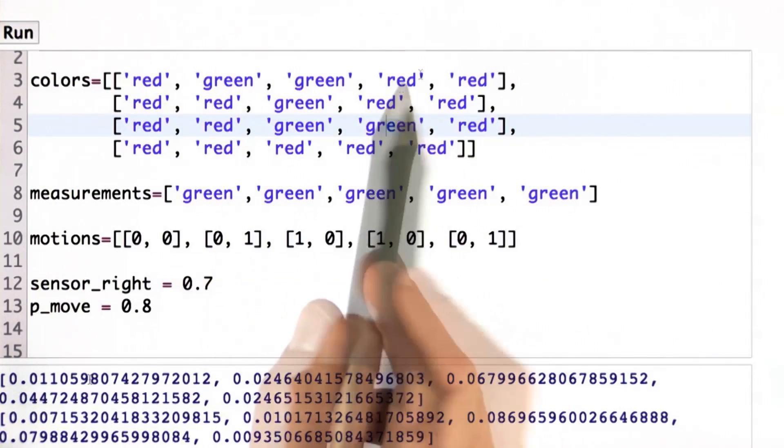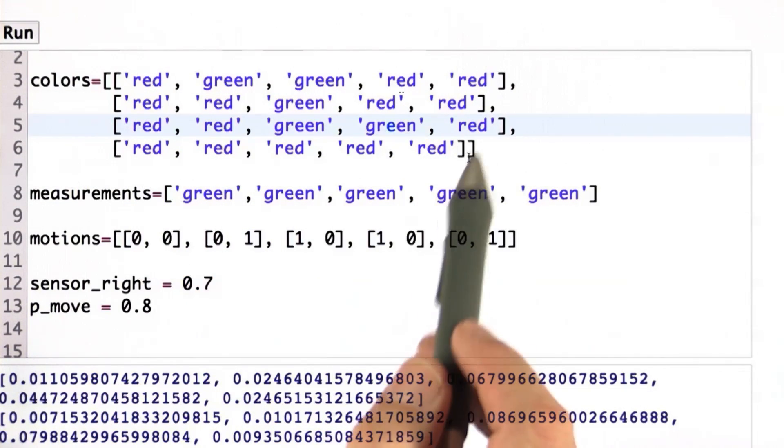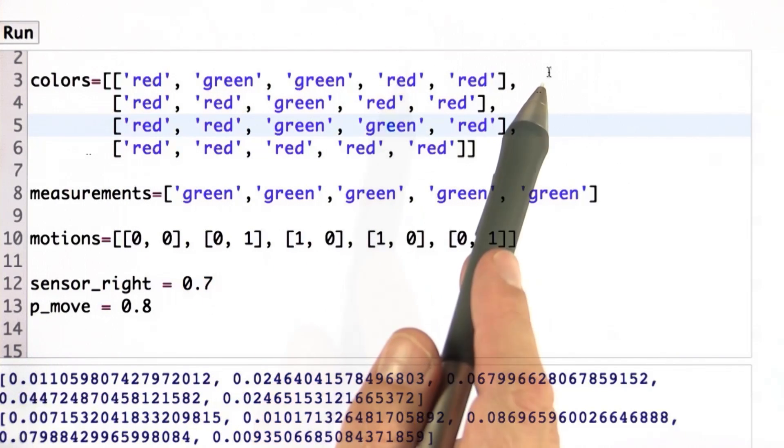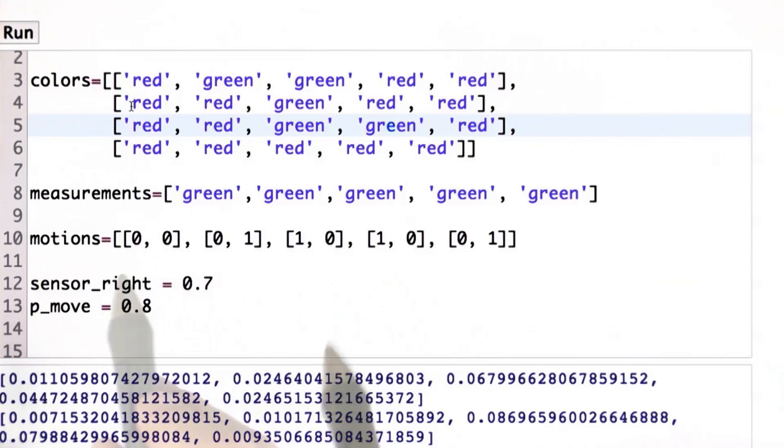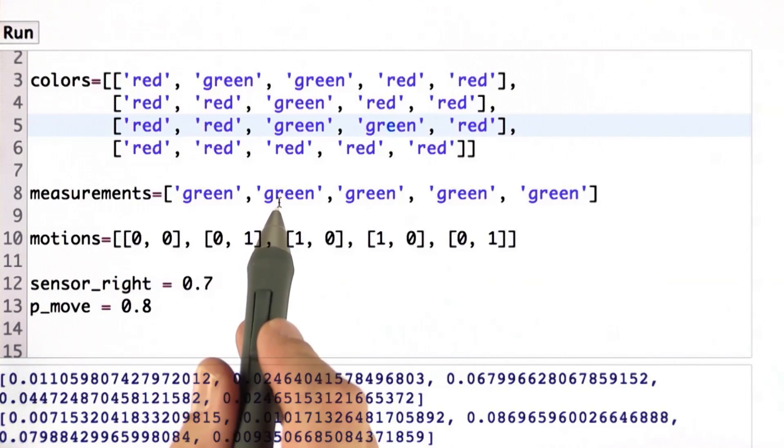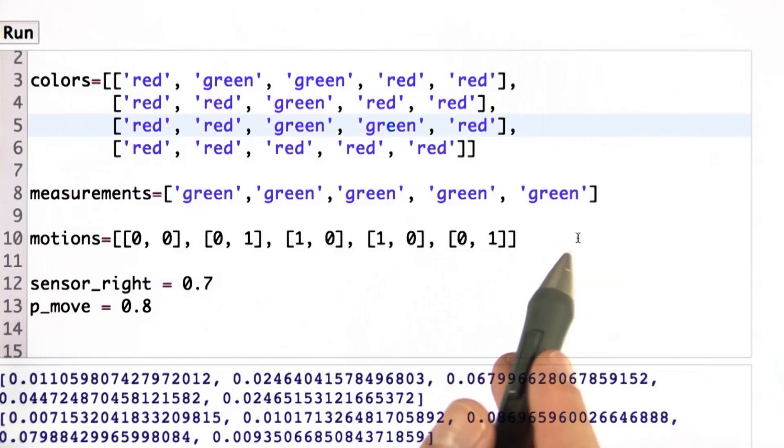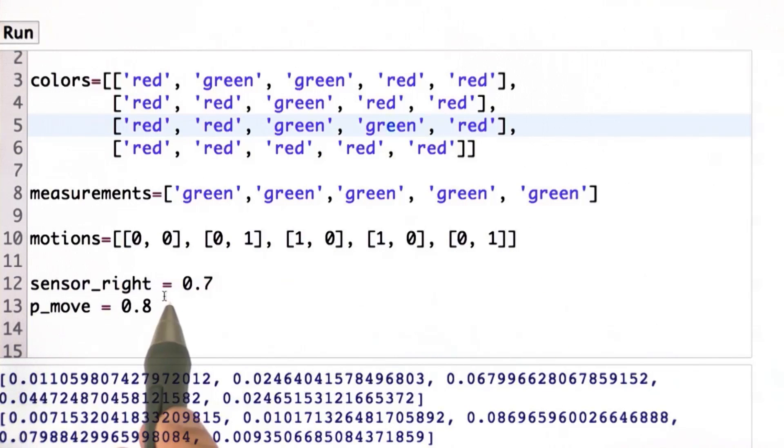In summary, read your colors, build a probability distribution of the same dimensions, in this case 4 by 5, initialize them with a uniform distribution, execute a motion first, then measurement, motion, measurement, motion, measurement, motion, measurement, and so on. You can safely assume that the measurement vector is of the same length as the motion vector, using those measurement correctness probability and motion success probability, and then compute and output just the final distribution. If you've done this, you will succeed.